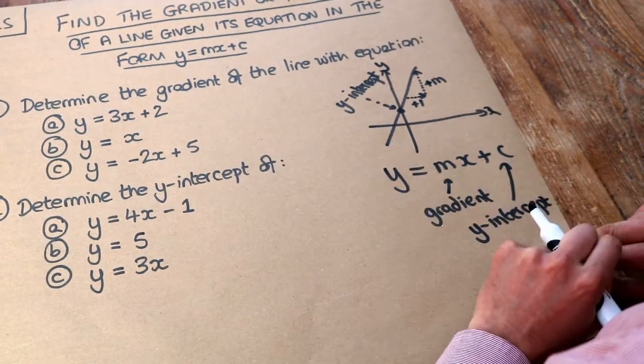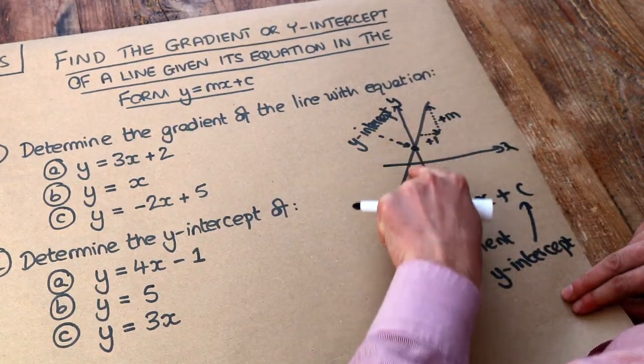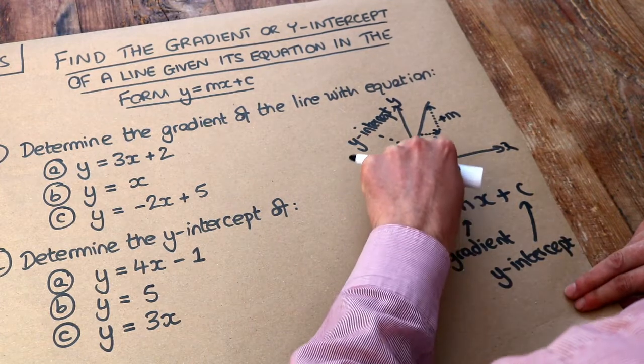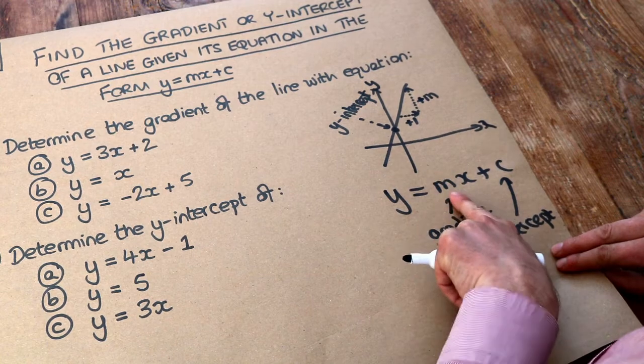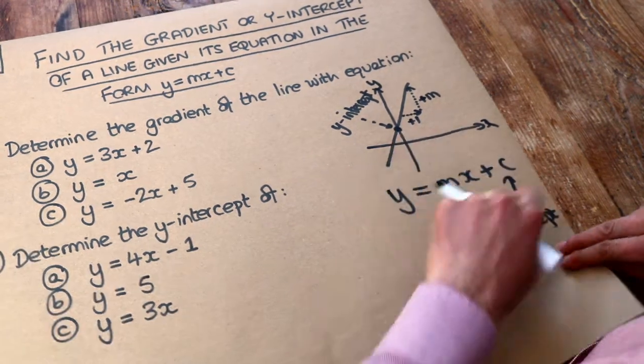And x and y are variables. That allows us to have different points on the line. So as we choose different points, the x and y changes. But the gradient of the line always remains the same and the y-intercept still remains the same.